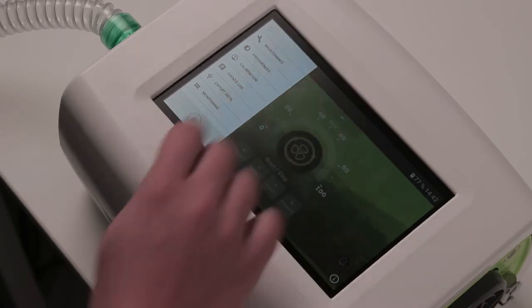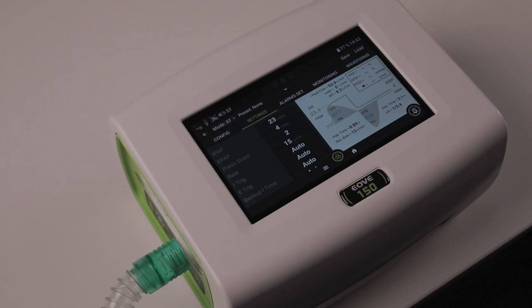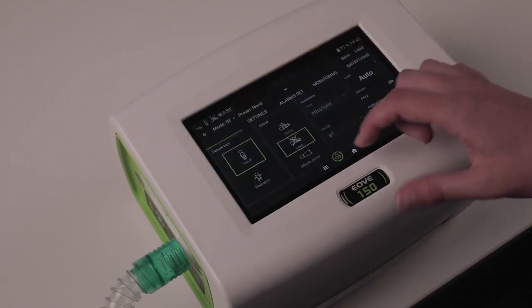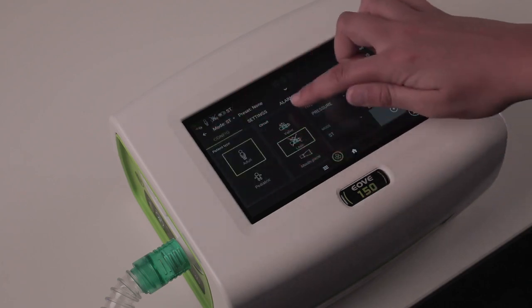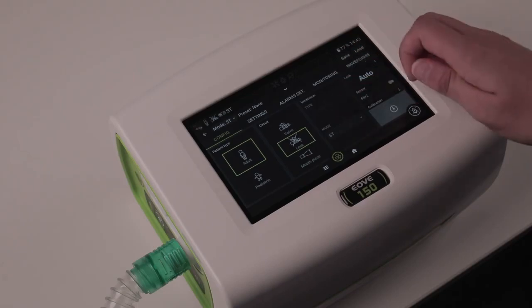You now have access to the settings via the clinical menu. On the configuration tab, select the patient type, the patient circuit type, and the type of ventilation, pressure or volume, and the ventilation mode.